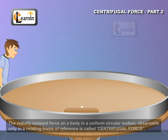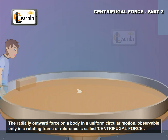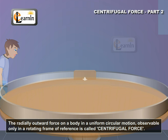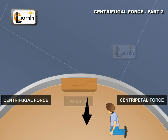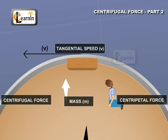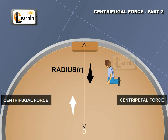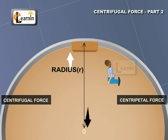The radially outward force on a body in uniform circular motion, observed only in a rotating frame of reference, is called centrifugal force. Both centrifugal and centripetal forces depend on mass m, tangential speed v, and radius r of the circle. They are equal in magnitude but opposite in direction.